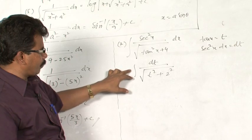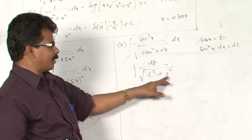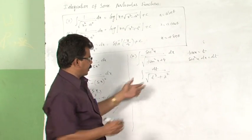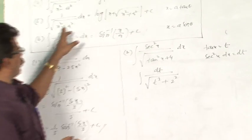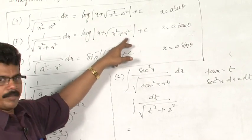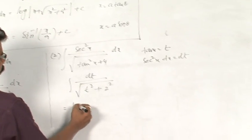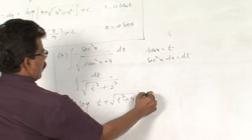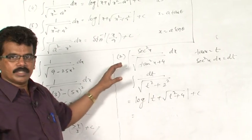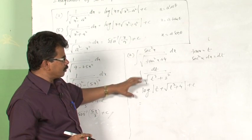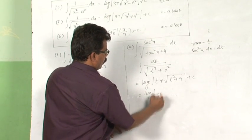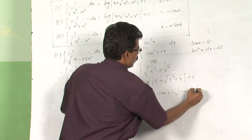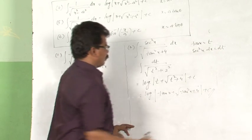This whole function is reduced into the form of integral 1 by root of x square plus a square. The integration of 1 by root of x square plus a square is log |x plus root of x square plus a square|. Therefore, the result is log |t plus root of t square plus 4| plus c. Now, the function is given in terms of x, so you must write the solution also in terms of x. The final answer will be log |tan x plus root of tan square x plus 4| plus c.